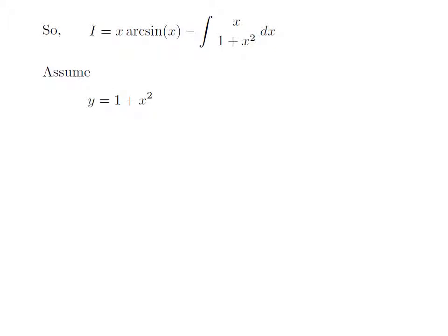To simplify the integration, let us apply the substitution method. Assume y is equal to 1 plus x squared. Taking the differential of y, we get differential of y is equal to the derivative of 1 plus x squared with respect to x, into differential of x. The derivative of 1 plus x squared with respect to x is equal to 2x. So, differential of y is equal to 2x into differential of x. Taking 2 to the left, differential of y divided by 2 is equal to x into differential of x.